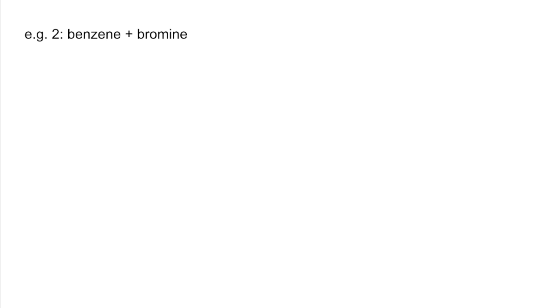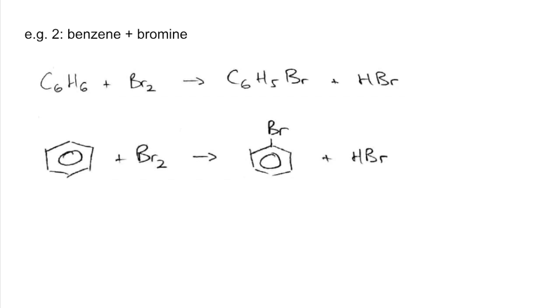The second example is benzene with bromine. Again, two representations of the overall reaction, and you can see that only one hydrogen has been substituted with a bromine. We could call this monobromination.